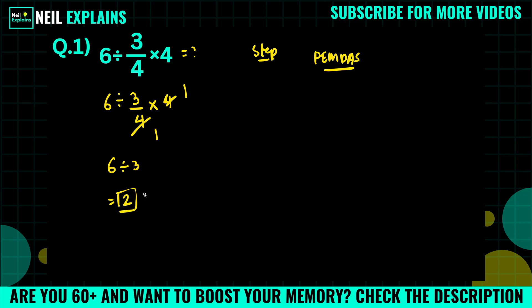Do you think this is the right answer? No, you are wrong. So what is the best way or corrected way? We will solve, we will write again our question: 6 divided by 3/4 times 4.